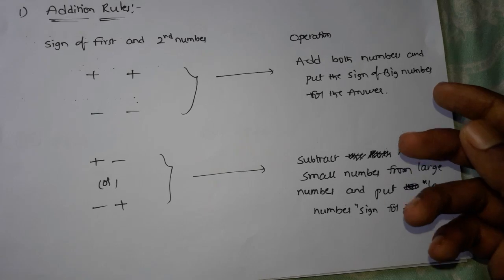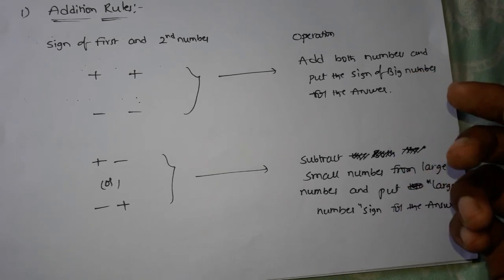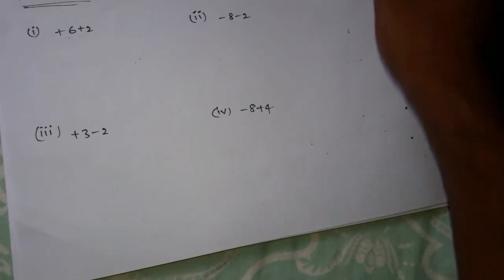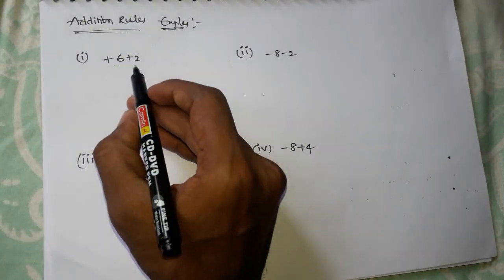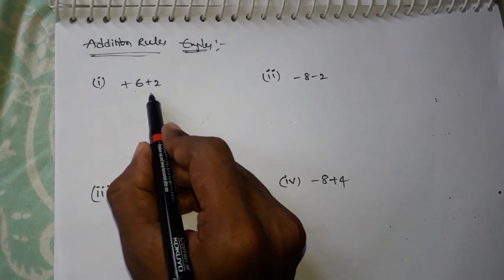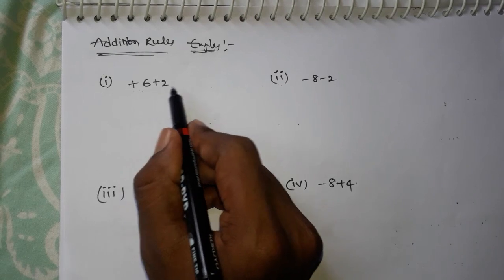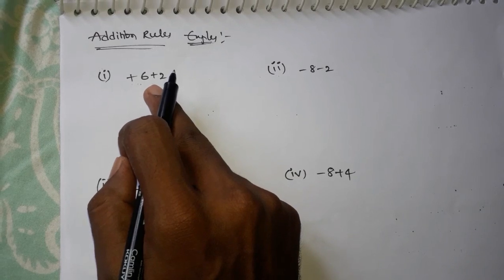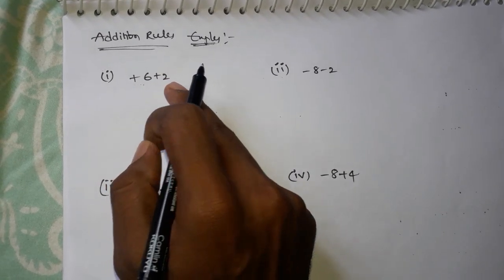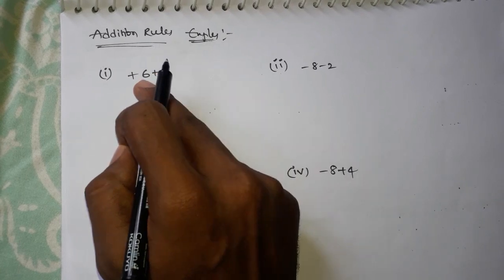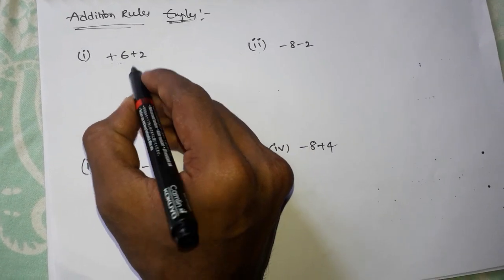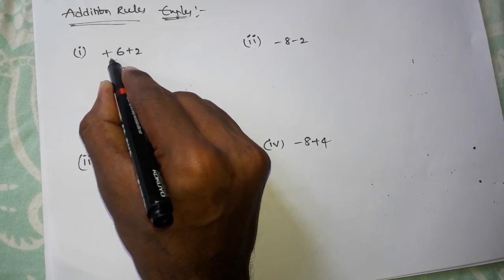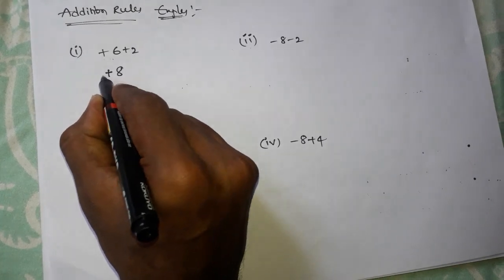Example: 6 plus 2. When you have two numbers with the same sign, add the two numbers. 6 plus 2 is 8. The big number is positive, so the answer is plus 8. This is the answer.